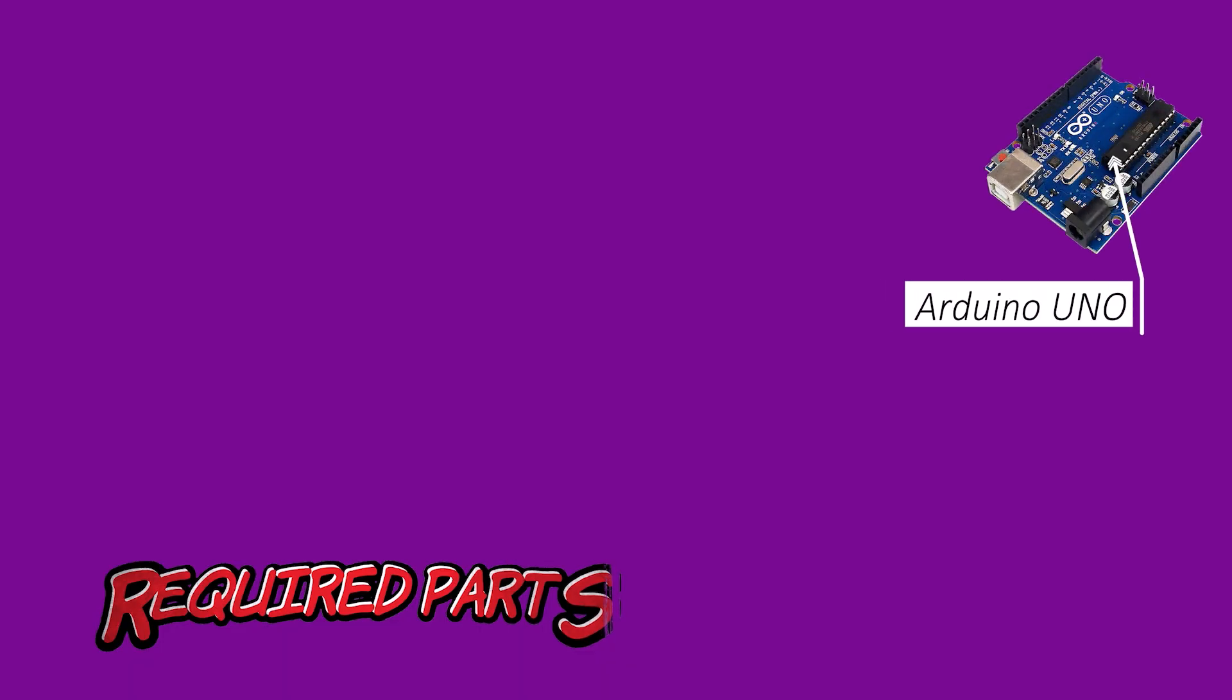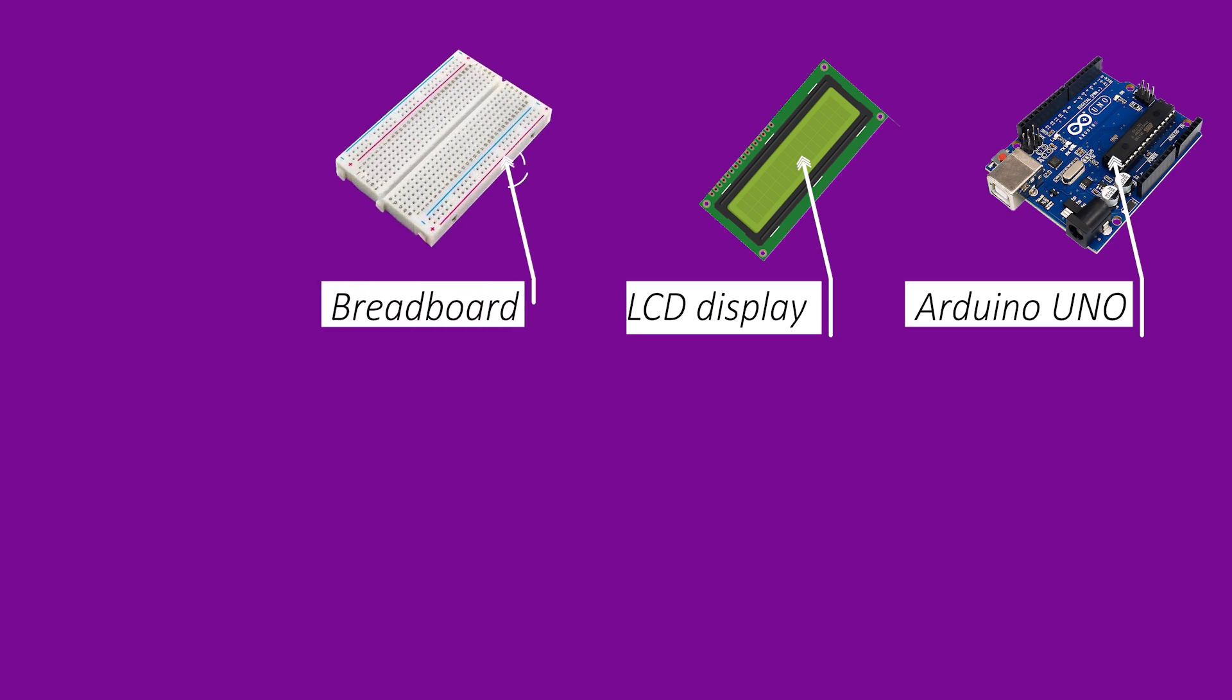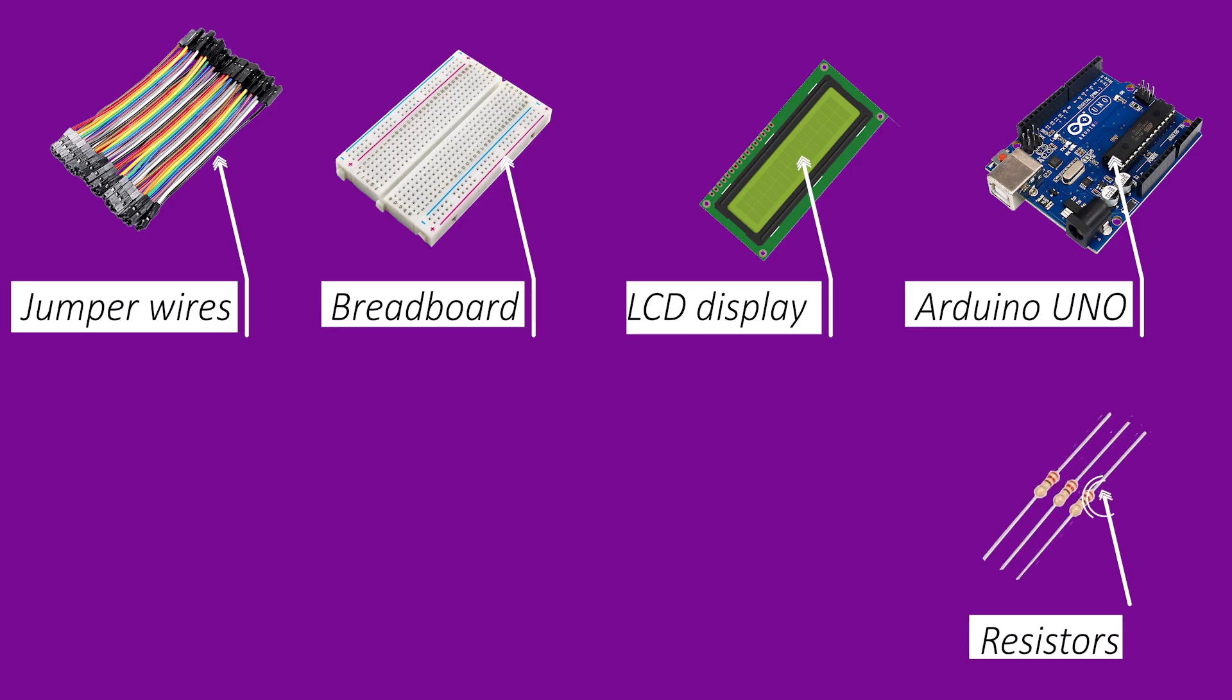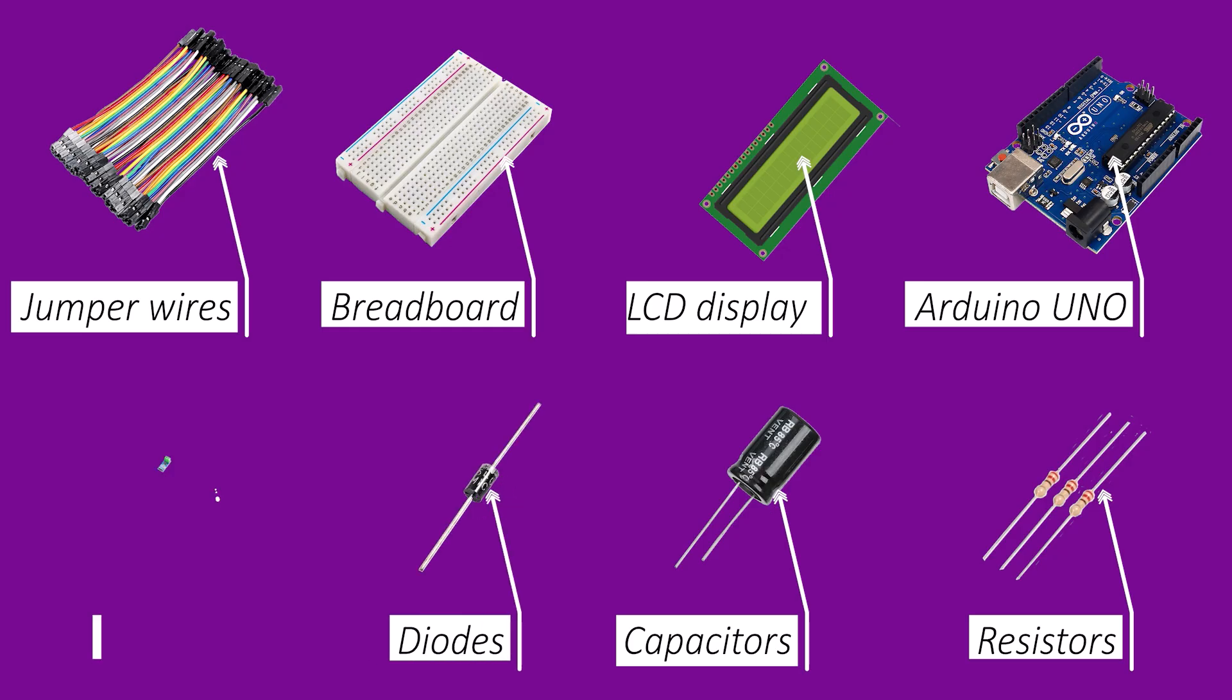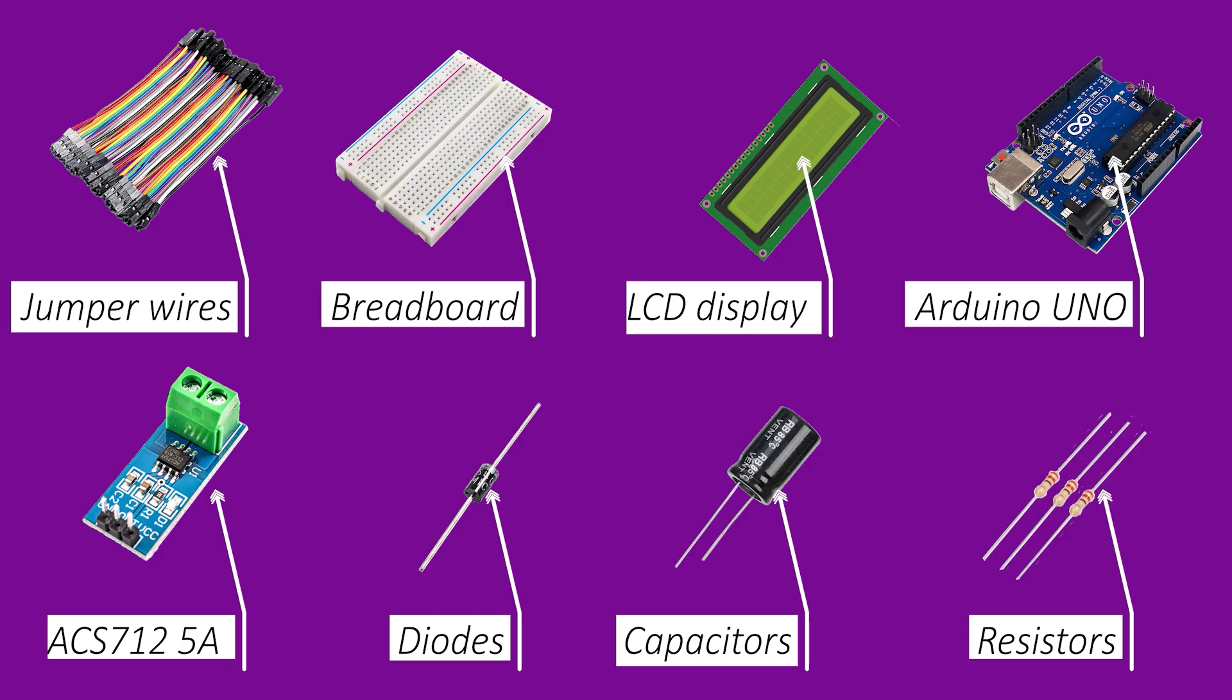Now, let's talk about what you will need to build this multimeter. The main component is an Arduino Uno, which will act as the brain of our multimeter. You will also need an LCD display to show the measurements, a breadboard for connecting components, jumper wires, resistors for creating voltage dividers and shunt resistors, capacitors for testing, diodes for protection, and an ACS712 5 ampere Hall effect sensor for current measurement. A detailed list of all components is available in the description below.